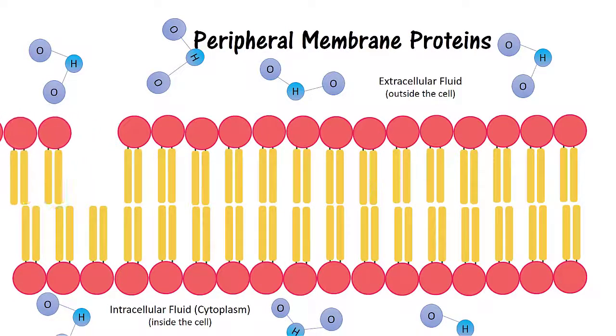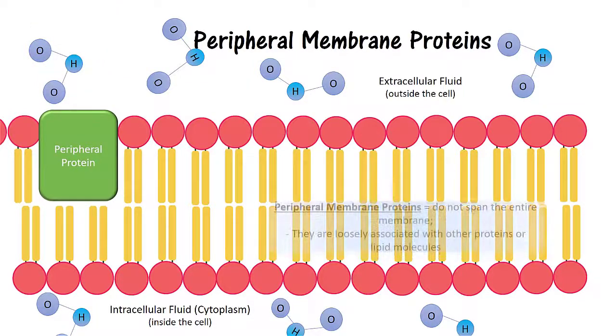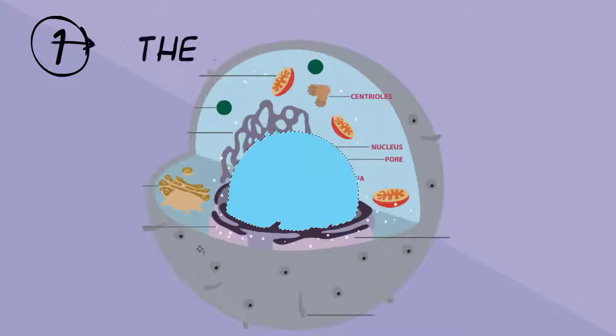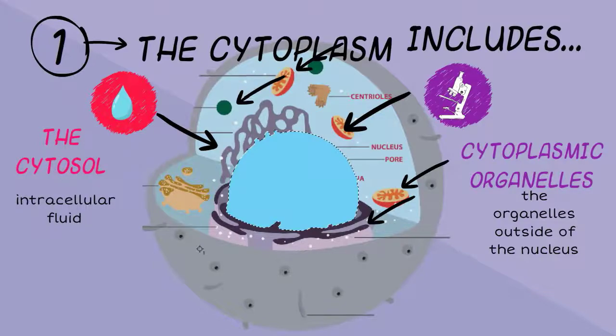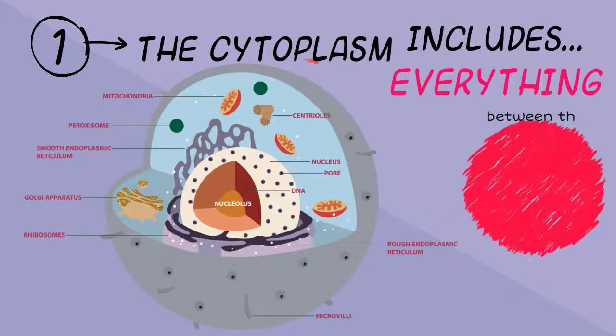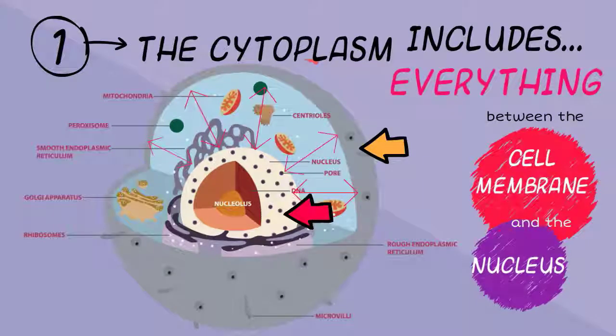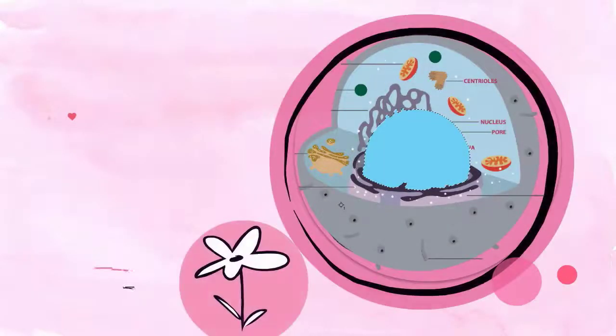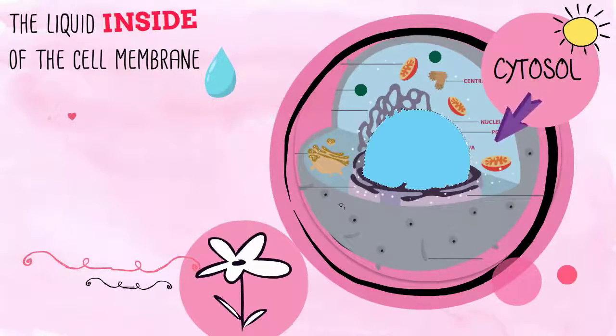Peripheral membrane proteins are only going to span the extracellular side of the cell membrane. The cytoplasm includes the cytosol, or intracellular fluid, and the cytoplasmic organelles. In other words, the cytoplasm would include everything between the cell membrane and the nucleus. The liquid inside of the cell membrane, but outside of the nucleus, is called the cytosol.